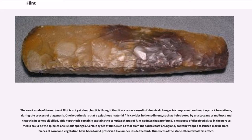The source of dissolved silica in the porous media could be the spicules of siliceous sponges. Certain types of flint, such as that from the south coast of England, contain trapped fossilized marine flora. Pieces of coral and vegetation have been found preserved like amber inside the flint.